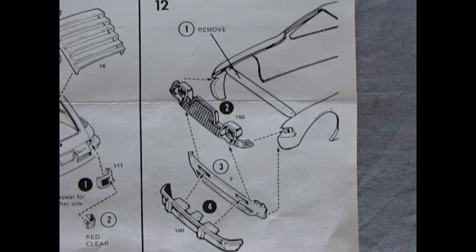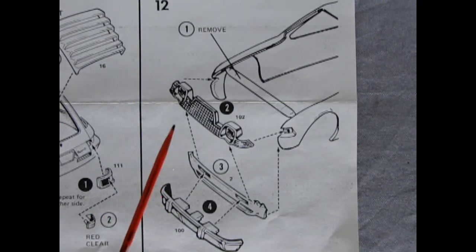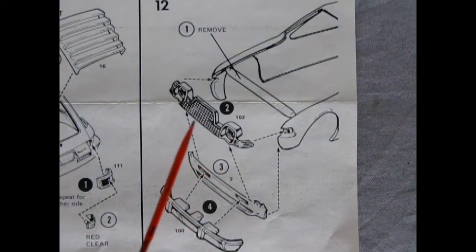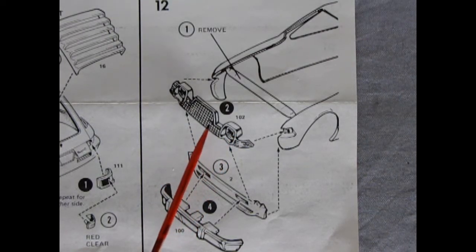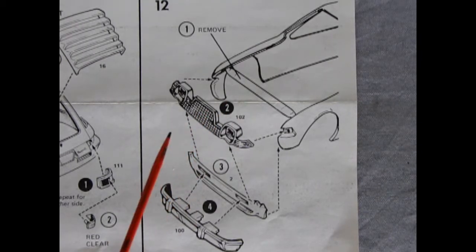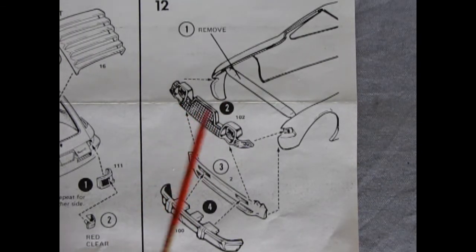Now one thing that makes the '78 pacer different from the earlier ones is in '78 they put in the V8 motor. This one of course has a six, but in order to accommodate the V8 they had to add in this little radiator thing and a bulge in the hood. So there's that grille.